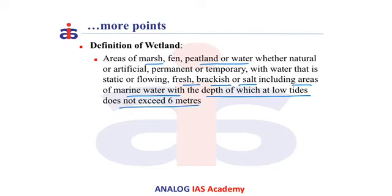That implies, according to the definition, a wetland can be artificial or natural, and it can be saline, fresh water, as well as brackish.